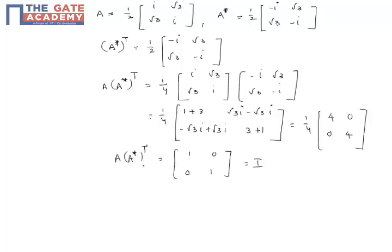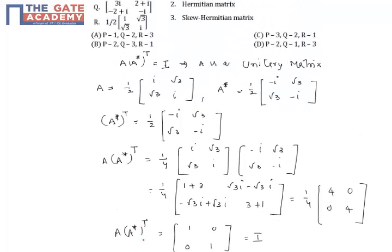This matrix satisfies the unitary equation. Whenever A into A-conjugate whole transpose equals I, we can say that the matrix A is a unitary matrix.